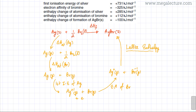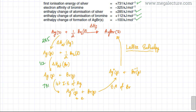Now I'm going to fill in the values. The first ionization energy of silver is 731, so this path is 731. The enthalpy of atomization of bromine is 112 kilojoules per mole. The enthalpy change of atomization of silver is 285 kilojoules per mole. The enthalpy change of formation of AgBr is minus 100. And the electron affinity of bromine is minus 325.